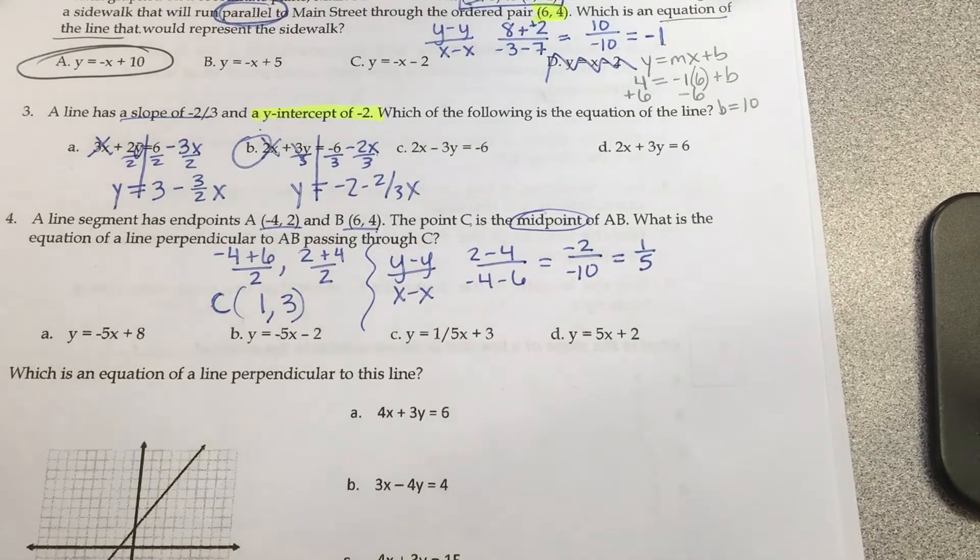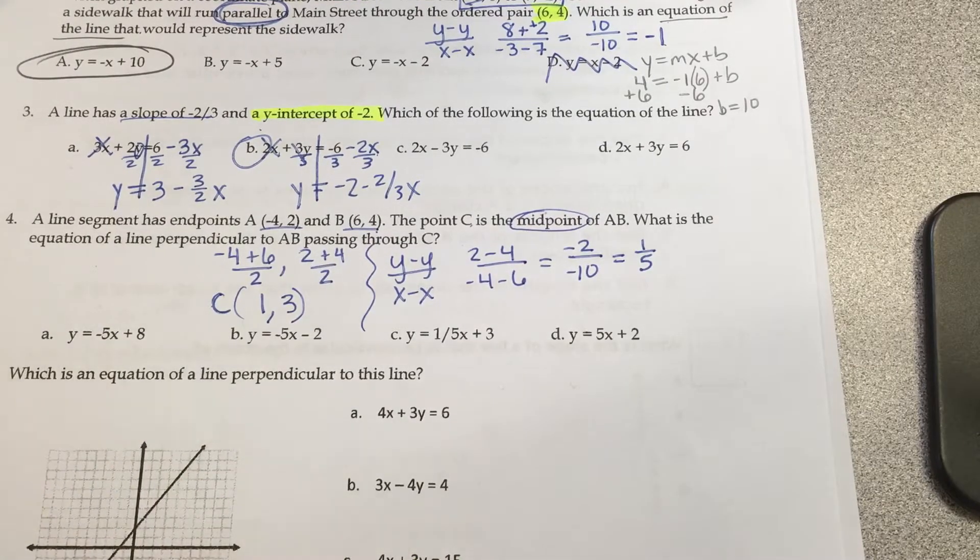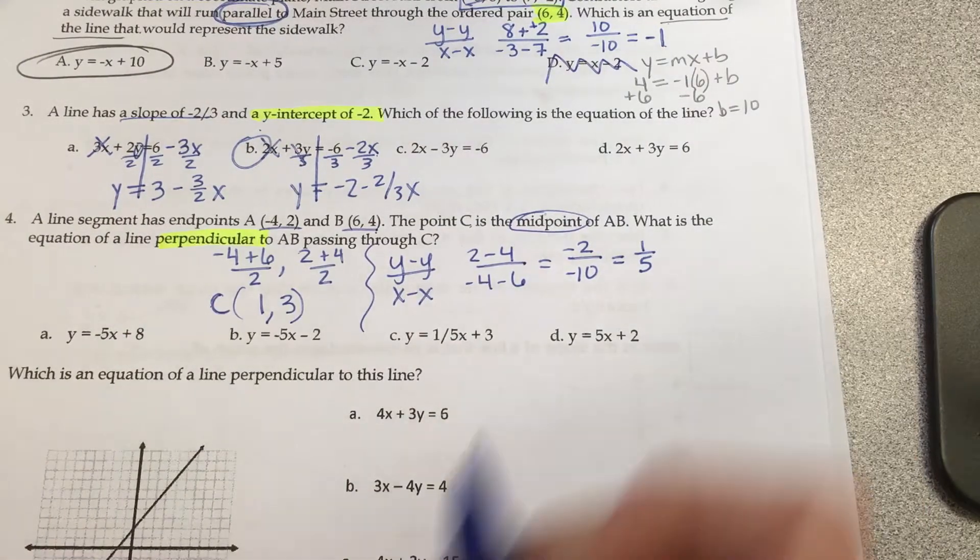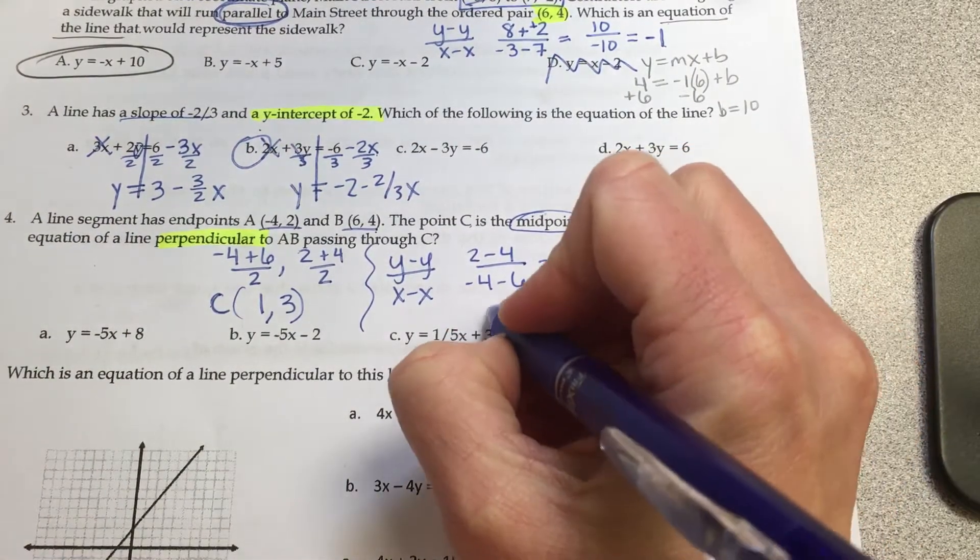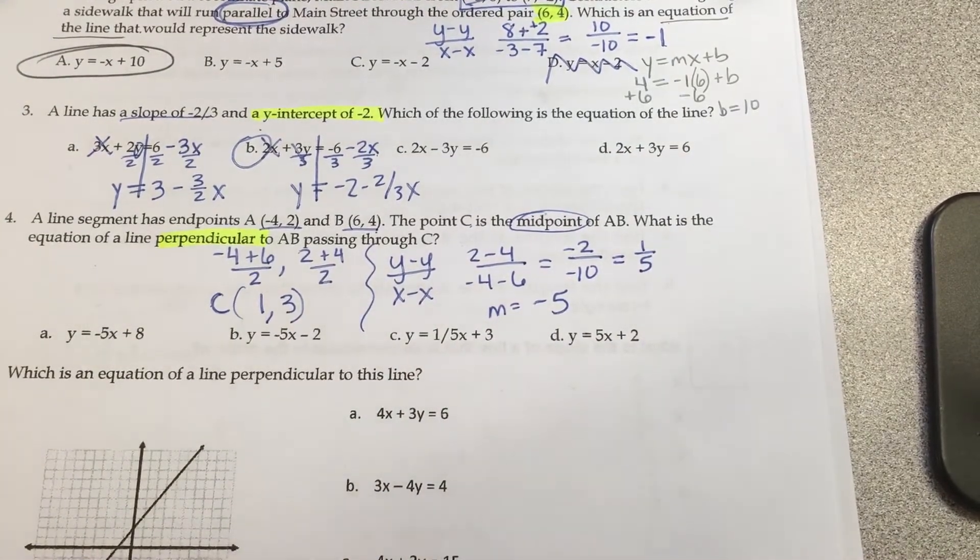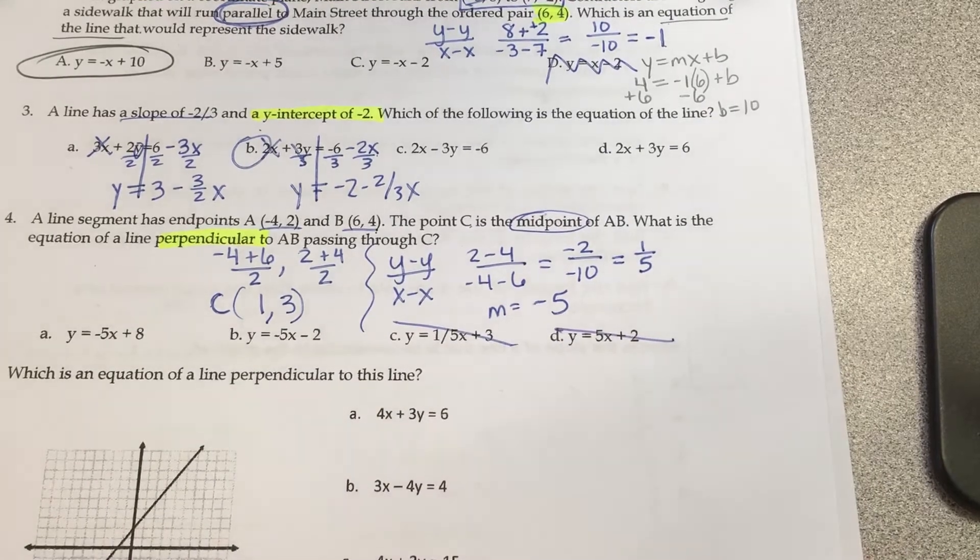Do I keep it the same or do I flip and change? Very good, you flip and change. One-fifth becomes what? Negative 5 is your slope. So what are some answers we can go ahead and mark out? Good - C and D. It's got to be negative 5.